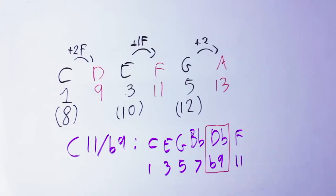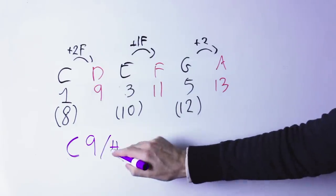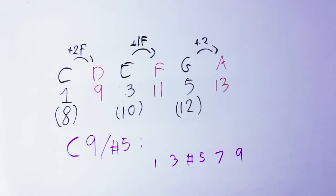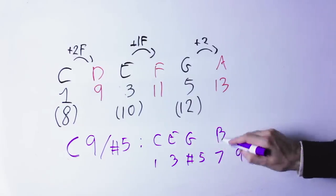Or I can have a C nine with a sharp five. C nine is C, E, G, B flat, D. The sharp five tells me to take the G and raise it up to a G sharp. All those examples may sound complex right now.